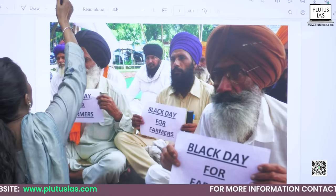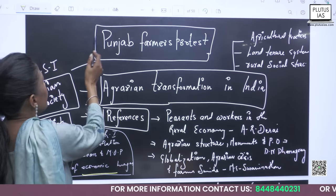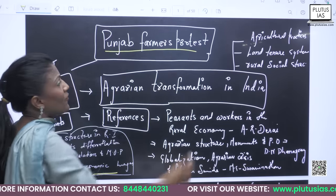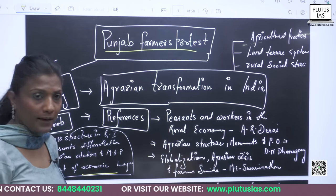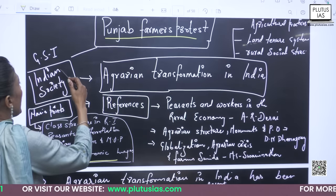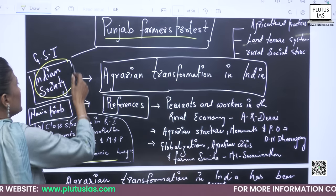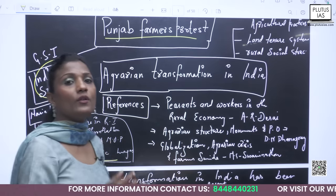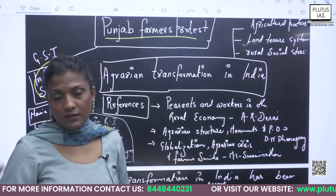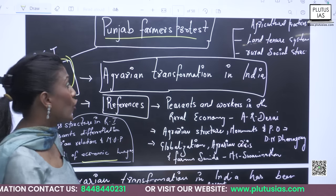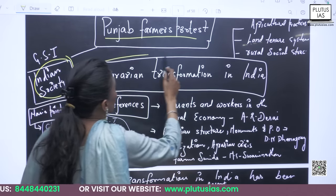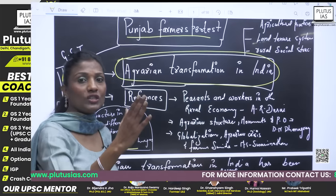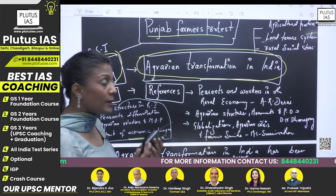First of all, we need to understand the Punjab farmer protest in a broader manner. For that, we need clarity over our syllabus — it is a part of Indian society, specifically the agrarian sector. Agrarian transformation in India can be a better framework for understanding farmer protest in GS1. Now you need to know some important points.